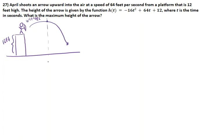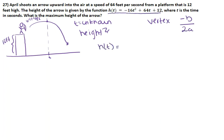To do this we need to know what time it is at. So our t is unknown as well as our height. Luckily, we have a formula to find our vertex which will give us our t. The formula for the vertex is negative b divided by 2a. And we are given the function h(t) = -16t² + 64t + 12. And this is how we're going to find our maximum height. But first, we have to find our t.